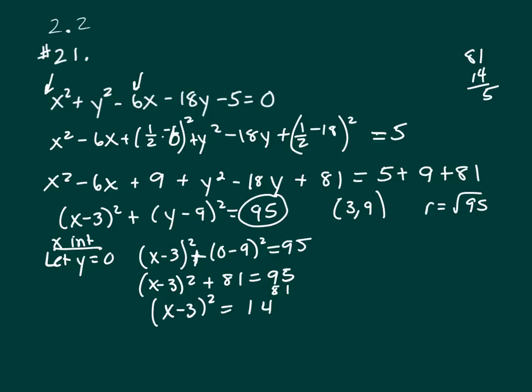Now take the square root of both sides. And that gives me X minus 3 equals plus or minus square root 14. So X equals 3 plus or minus square root 14.